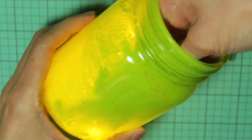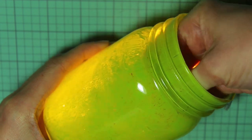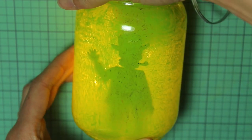So find the side of the jar that the silhouette will show through the best and then decide how you want to position it.